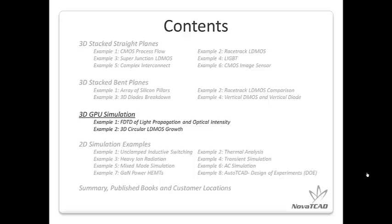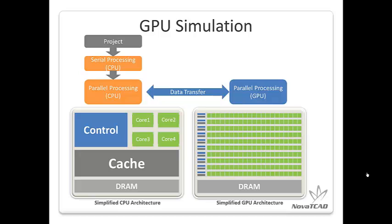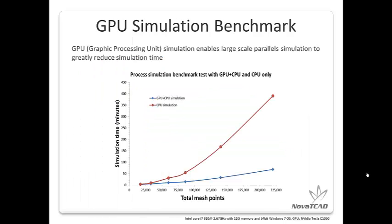Next, let's get into GPU simulation. The GPU, or graphic processing unit, is becoming more and more powerful. Like a CPU, GPU is designed to hold a large number of computing cores — for example, a state-of-the-art CPU has 8 cores, while a high-end GPU can have over 3,000 cores, making GPU especially desirable for parallel simulations. A benchmark test shows that as the total number of mesh points increases, GPU simulation becomes exponentially faster than CPU simulation.